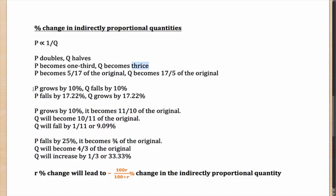Now you might be thinking that if P grows by 10%, Q will fall by 10%. Or if P falls by 17.22%, Q will grow by 17.22%. Well, if you are thinking that, let me tell you, you are wrong. This is incorrect. This is false. So if this is false, how do we actually solve it?